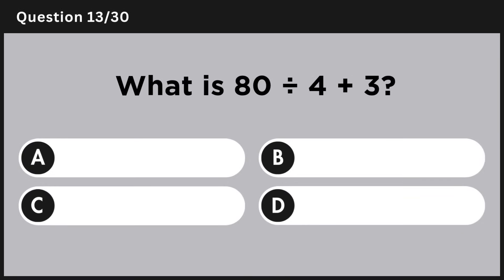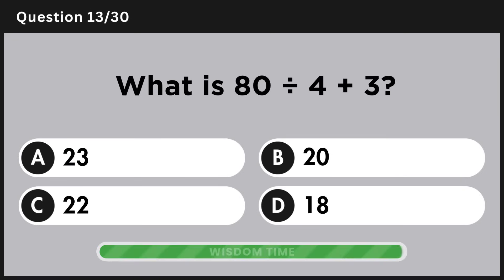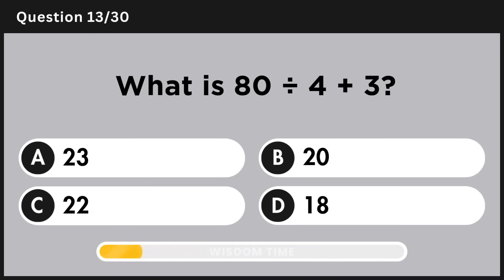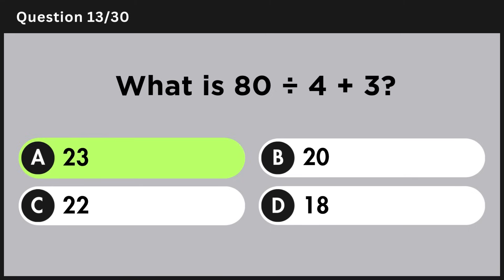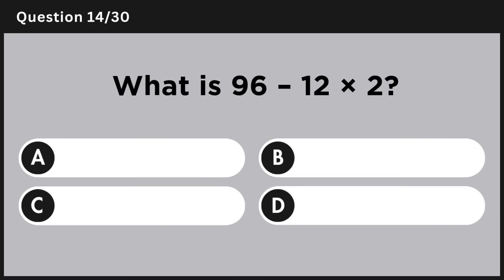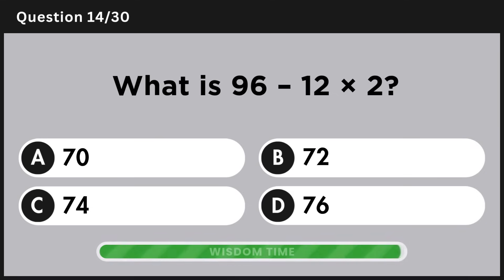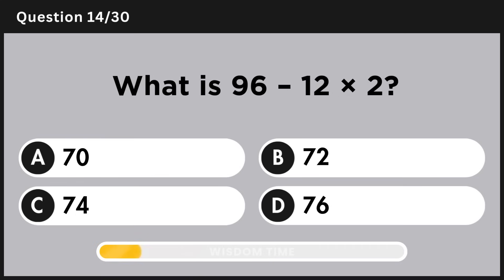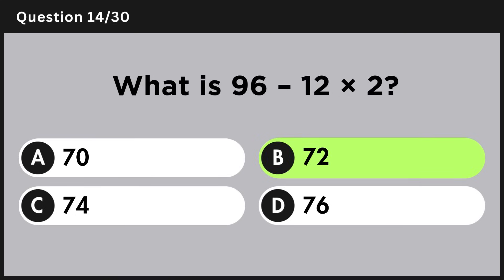What is 80 divided by 4 plus 3? Answer A: 23. What is 96 minus 12 multiplied by 2? Answer B: 72.